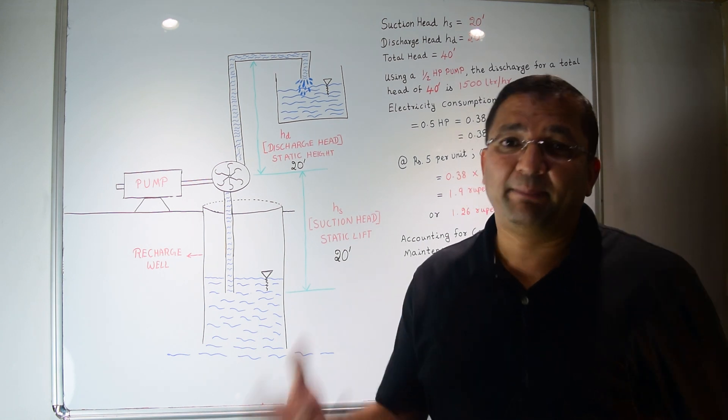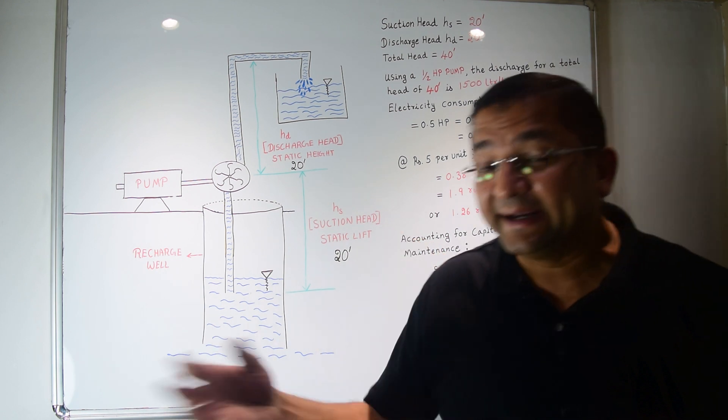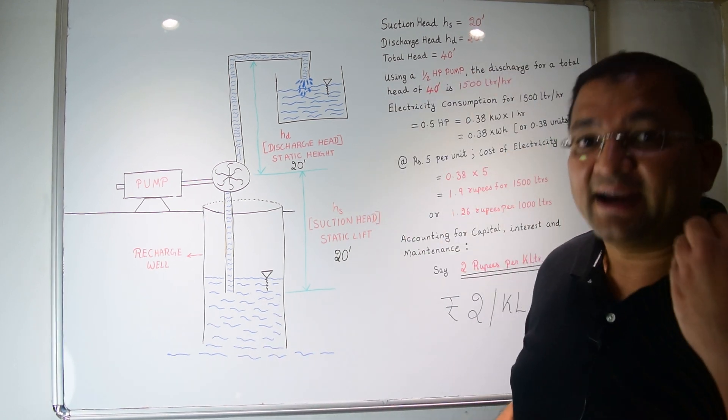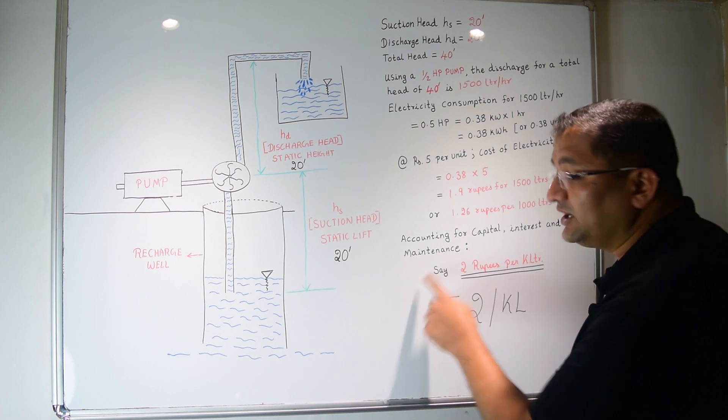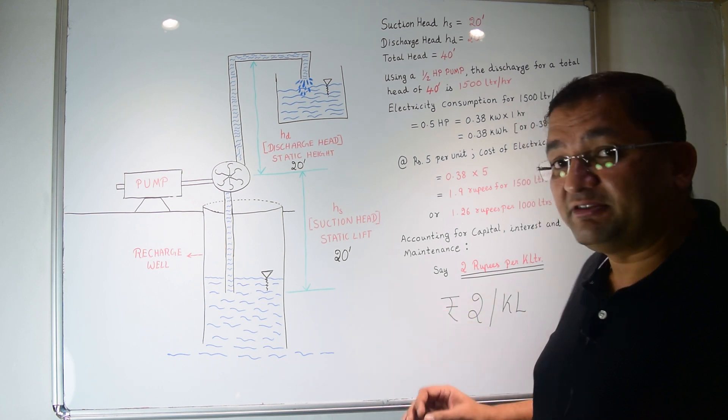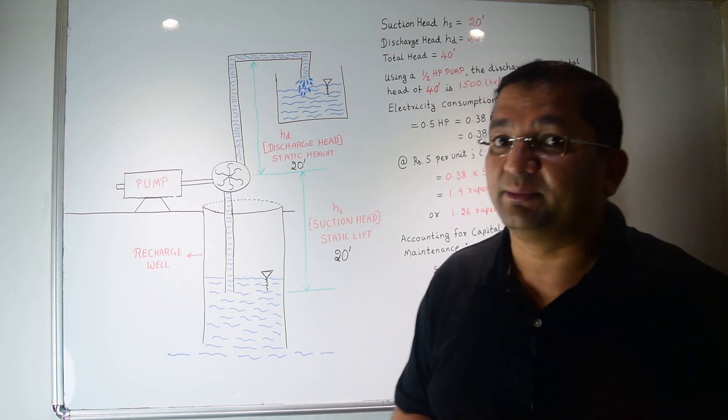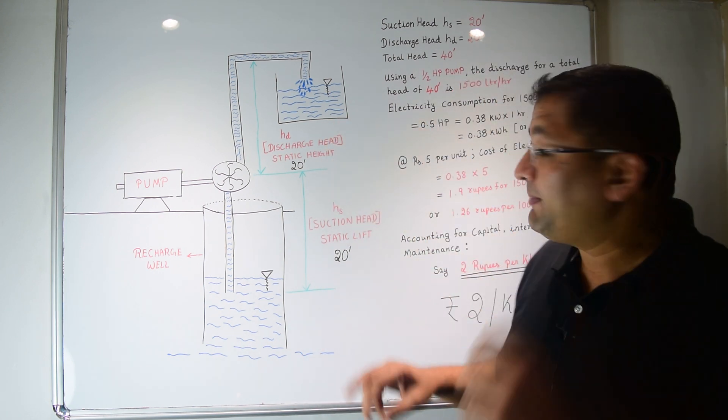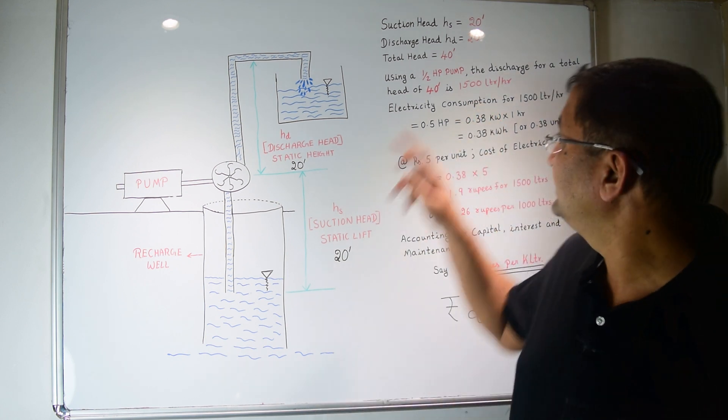Now accounting it for capital cost, for interest and for maintenance expenses, we will add another 75%. So the cost of water becomes 2 rupees per kiloliter. This is a very, very conservative estimate. The 0.5 HP pump can pump much more water than 1500.